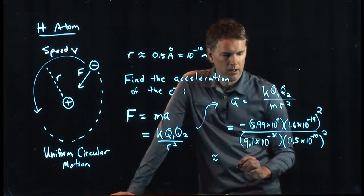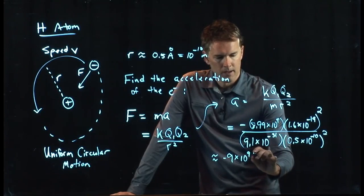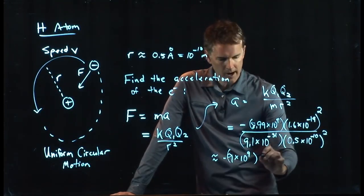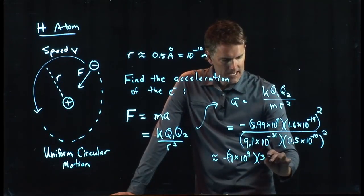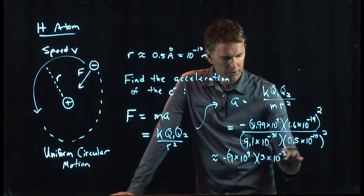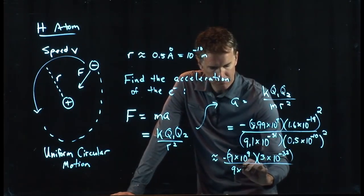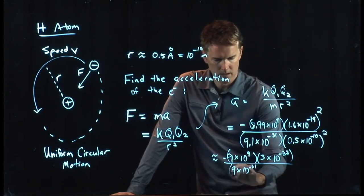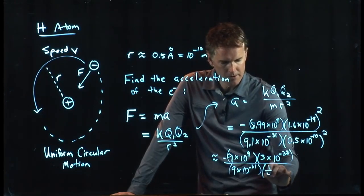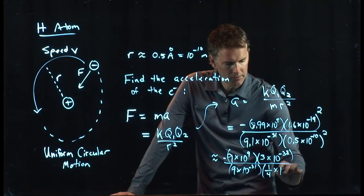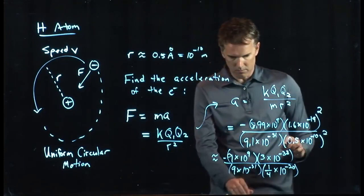And now you guys should pull out your calculator and plug in those numbers and tell me what you get. And we're going to approximate it here. So we have a 9 times 10 to the 9. And then we have 1.6 squared has got to be close to 3. 10 to the minus 19 squared is 10 to the minus 38. So if we punch all these in, what should we get?